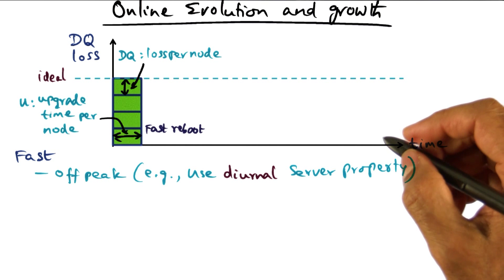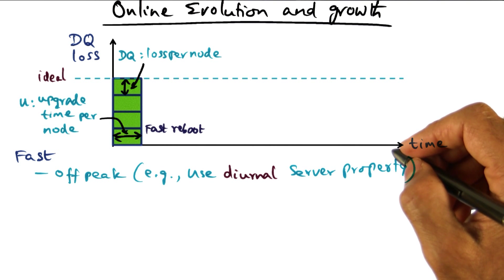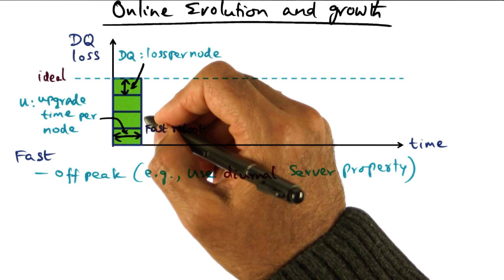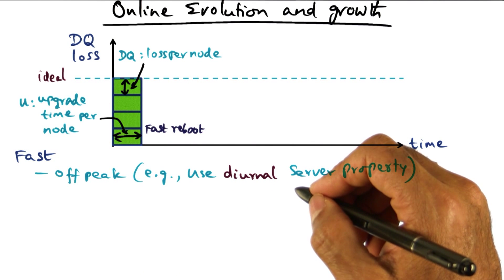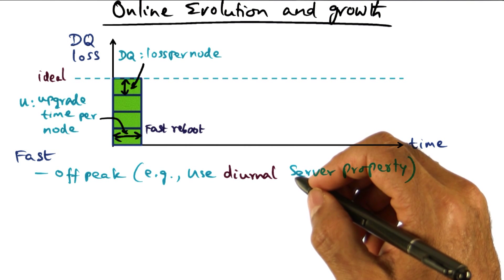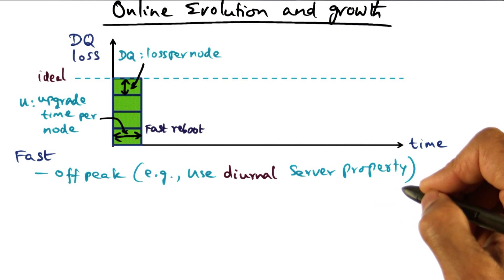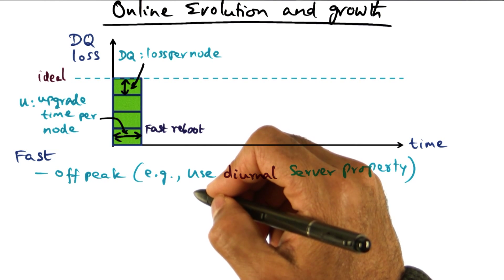This idea of fast reboot is particularly useful in situations where we can use diurnal server property. For instance, if you think about services that are being all across the globe, we can use factors such as, this is night time for the user community, and the users have probably gone night night, and therefore, they're not going to access the service. This is a good time to bring down the whole service and upgrade the service. So that might be a situation where fast reboot is very useful. So we are assuming that the user community is segmented so that they are directed to geographically different locations, and we can use the diurnal server property to do this off-peak fast reboot of chosen replicas of the services.